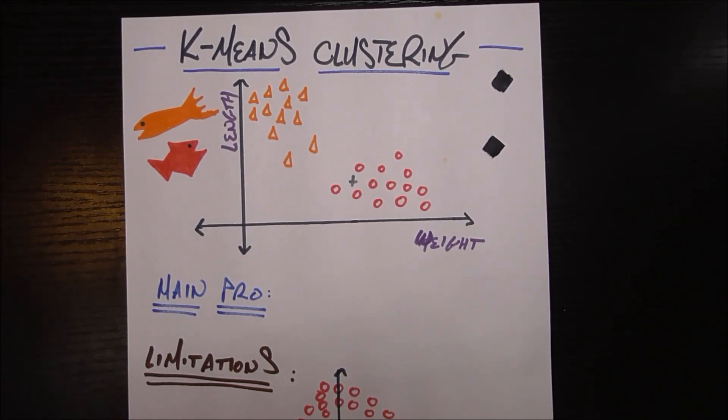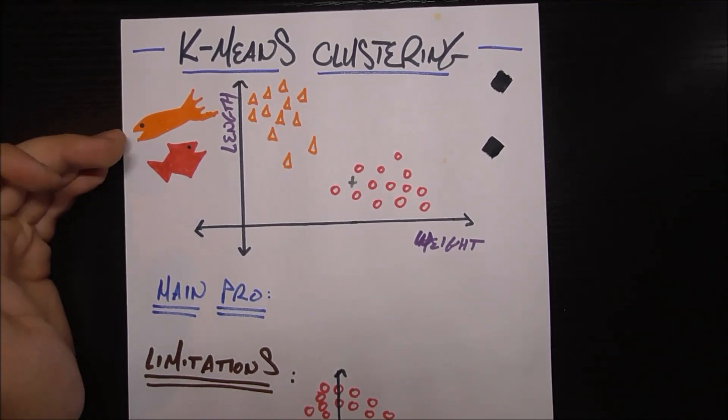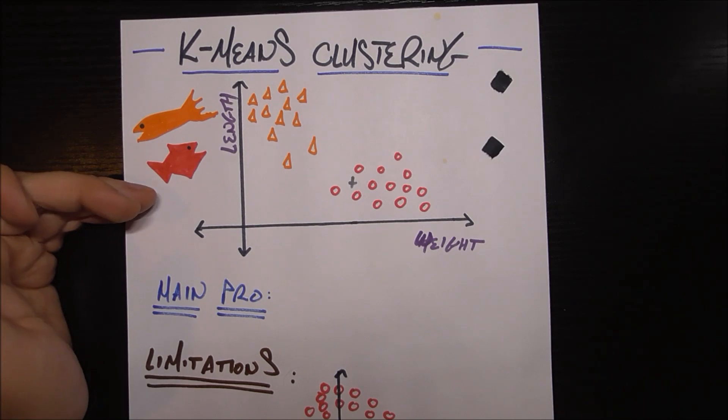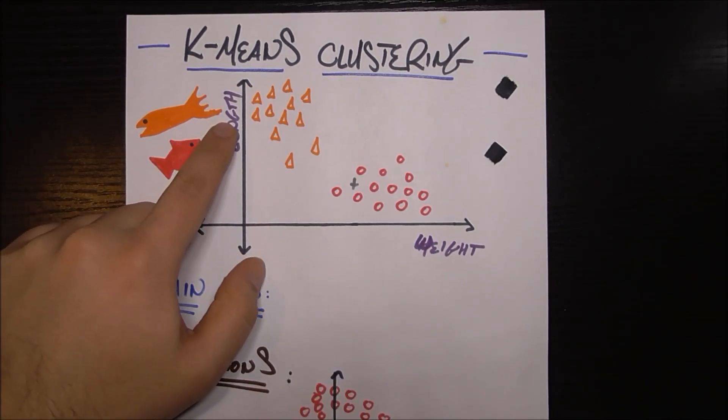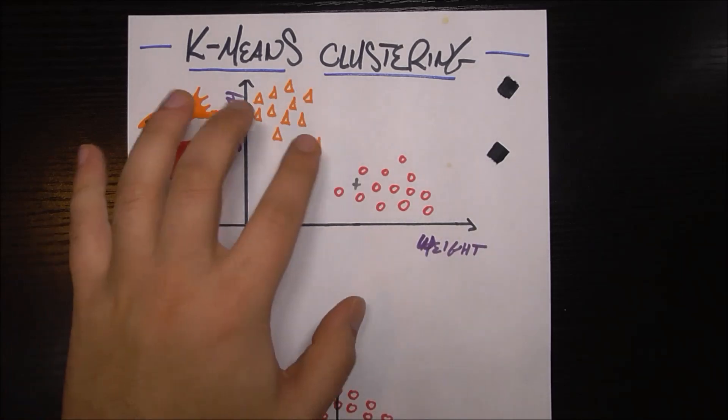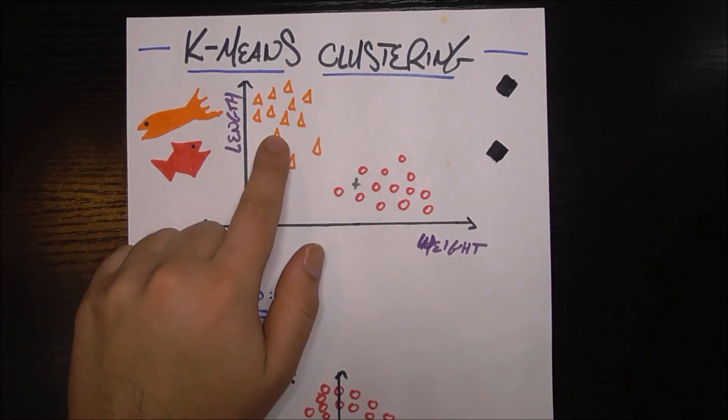k is the number of classes you want to separate your space into. For our example, as in many of our other machine learning videos, we'll be using the example of trying to classify a fish as a salmon or a tuna based on its weight and its length. So you see in the space, I have several points. All these red circles represent tuna, and all these orange triangles represent salmon.